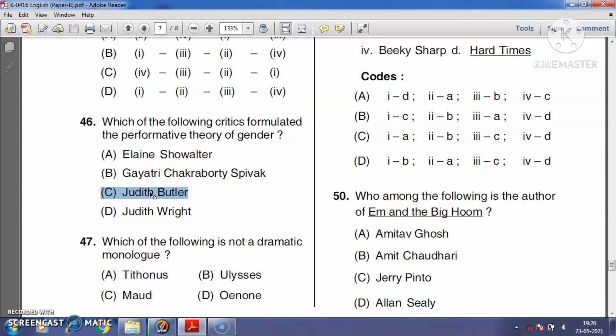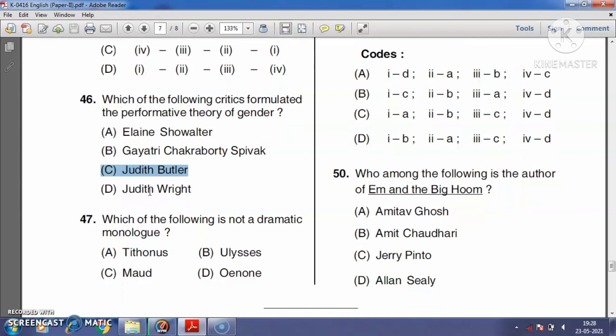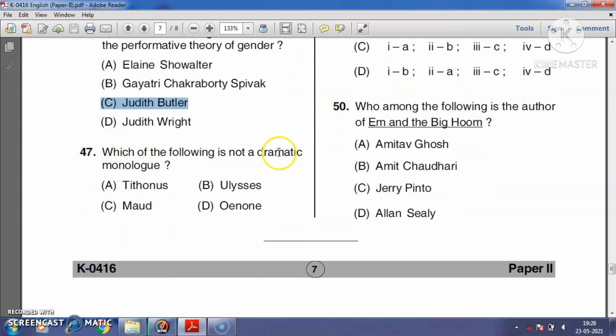Question number forty-seven: Which of the following is not a dramatic monologue? Tithonus, Ulysses, Maud, or Oenone? The right answer is option C, Maud. It is a poem by Alfred Lord Tennyson, published in 1855.